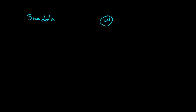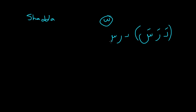Let me give an example. This is 'Darasa.' You'll notice this is one word but the Dal and the Ra don't connect — it's still one word. If you were to put a Shadda on the Ra, it would become 'Darrasa.' You would spend a little bit more time on the letter with the Shadda.